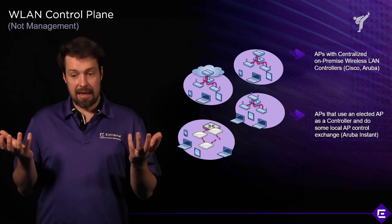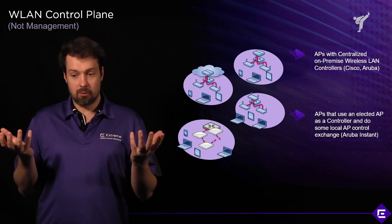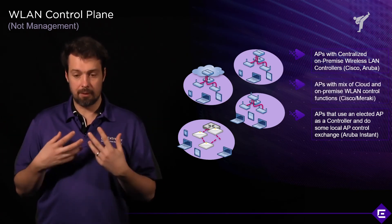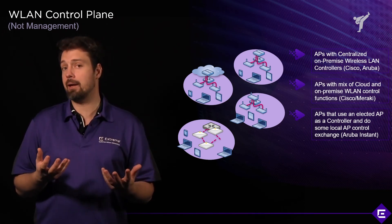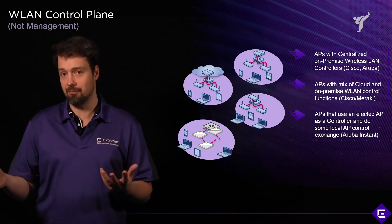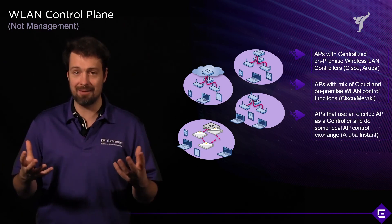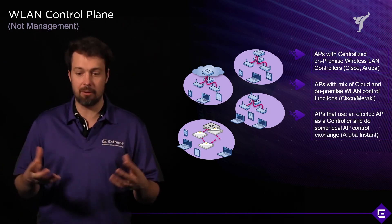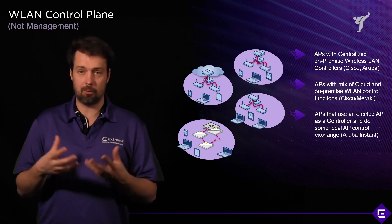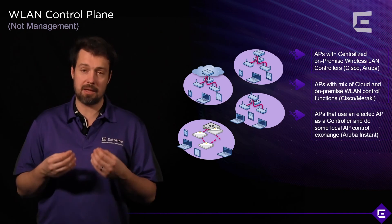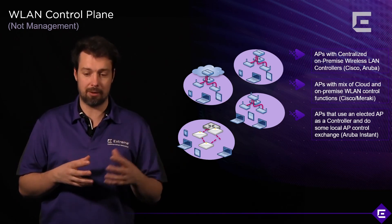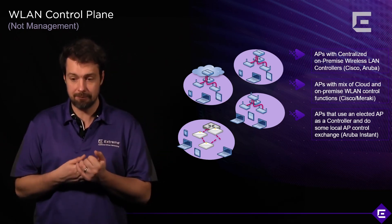Then you have access points with control in the cloud. In that case, you're depending on your WAN connection to work all the time — otherwise your network doesn't function correctly. This is not appropriate for all scenarios, especially those with poor or unreliable WAN connectivity.